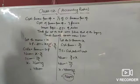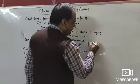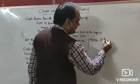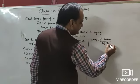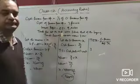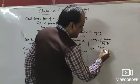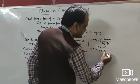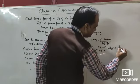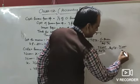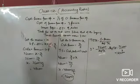Trade receivable turnover ratio formula = credit revenue from operation / average trade receivable. This ratio is given as 3 times, and credit revenue from operation is ₹3,60,000. So: 3 = ₹3,60,000 / average trade receivable. Therefore average trade receivable = ₹3,60,000 / 3 = ₹1,20,000.